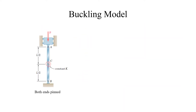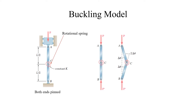Let's look at the buckling model. There is a column ABC subjected to a force P, with a rotational spring located at C, and both A and B are pin-connected joints. Looking at the free body diagram of ABC, if the column ABC buckles, there is an angle change of theta. For the rotational spring, M equals K multiplied by two times the change in theta, where K is the spring constant.